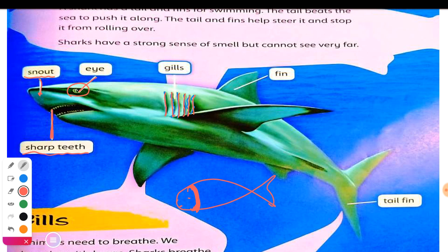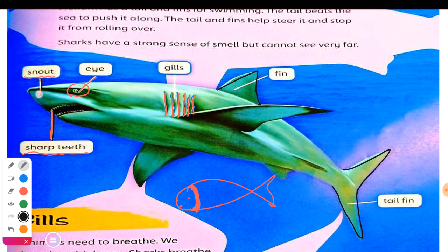Then we have here the fin. This fin helps them to swim. And they have also here what is called the tail fin. Let's repeat: we have the sharp teeth of the shark, the snout, the eye, the gills, the fin, and the tail fin.